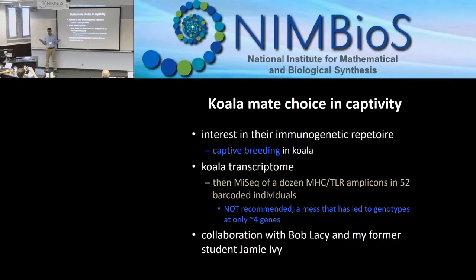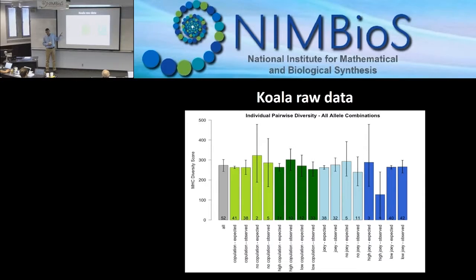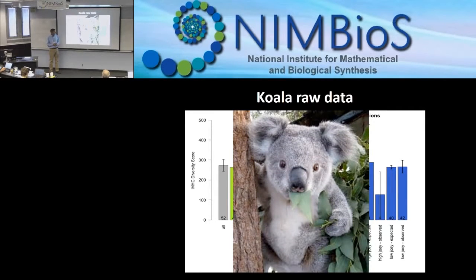We sequenced the koala transcriptome, characterized immune genes in detail, and then attempted amplicon sequencing on about a dozen MHC loci — the major histocompatibility complex, part of the adaptive immune system — and TLR, Toll-like receptors from the innate immune system. We went from a dozen amplicons to actual genotypes in only about four genes. It's become a bioinformatic mess, with no real signal in our data, so I'll show a picture of a koala until we get things sorted out.